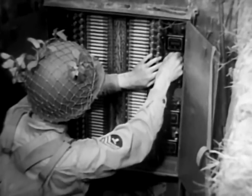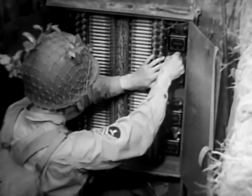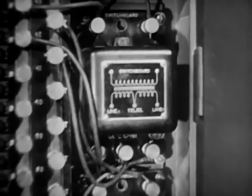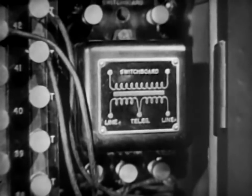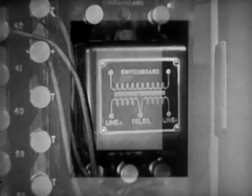The basic device used in establishing these circuits is the repeating coil. This is nothing more than a small transformer consisting essentially of an iron core and two windings.